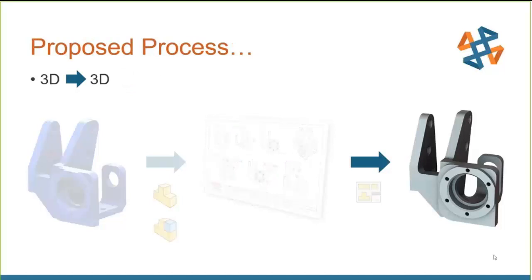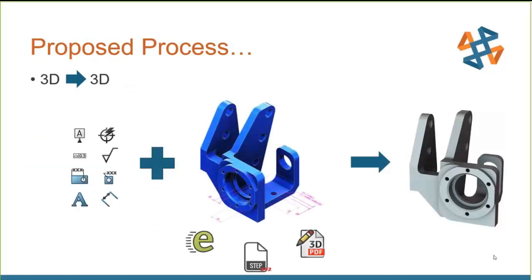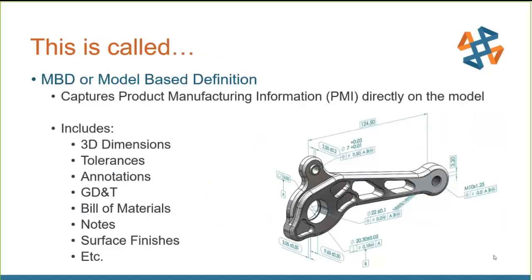The proposed process with MBD is to take that drawing out of the picture. If we add all our manufacturing information directly to our 3D model and share that data in formats that allow people to interact with it — rotate it, take measurements — the same way you can in SOLIDWORKS, wouldn't that reduce errors from 2D drawings? This is what we mean by model-based definition, or MBD: capturing product manufacturing information directly on the model, including 3D dimensions, tolerances, and annotations. Everything on the model updates just like a drawing, but you don't even need to create the drawing.